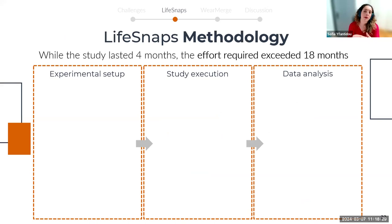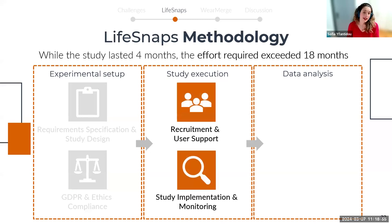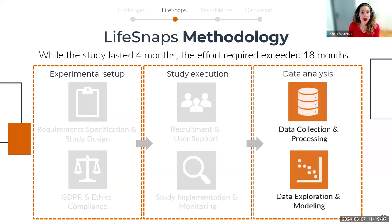While the study lasted four months, the effort required exceeded one and a half years. Our methodology was well-grounded and can be easily replicated for alternative cohorts. It comprises three stages: the experimental setup including technical requirements, specification and study design; ensuring GDPR and ethics compliance; then study execution including user recruitment and support, where we consciously opted for a gender-balanced sample; and finally the data analysis stage including data collection processing and exploration.